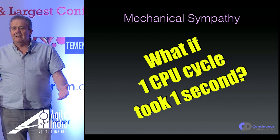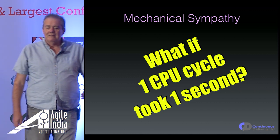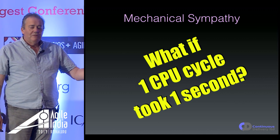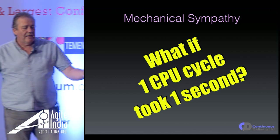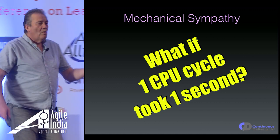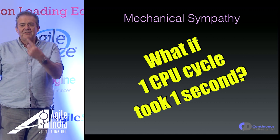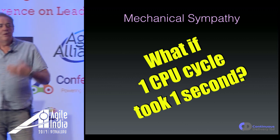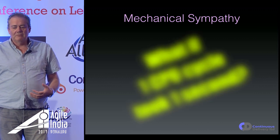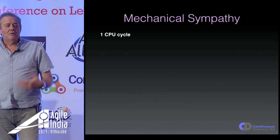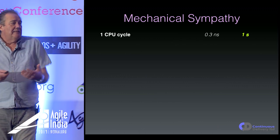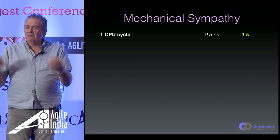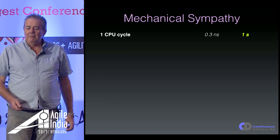Let's imagine that one CPU cycle in one of our computers — commodity hardware, my Mac, most things — took one second instead of the rate at which it actually operates. One CPU cycle is about 0.3 of a nanosecond at three gigahertz. So if that were equal to one second, what would that mean in terms of performance?